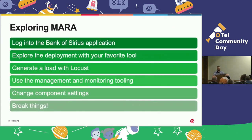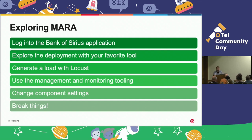Once you have it up, what can you do? You can log into the Bank of Sirius application. You can generate load with the Locust load generator, which has some pre-written test plans that Google came up with for Bank of Anthos. You can explore the deployment with every tool you want — use kubectl, K9s, use the dashboard. You can use the managing and monitoring tools we've built in; there are some convenient scripts to help with that. You can change component settings, put your own components in, and you can break things and see how it responds.